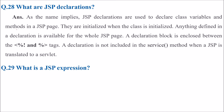What are JSP declarations? JSP declarations are used to declare class variables and methods in our JSP page. They are initialized when the JSP class is initialized. Anything defined in a declaration is available for the complete JSP page. A declaration block is enclosed between the appropriate tags, and the declaration is not included in the service method when JSP is translated to a servlet.